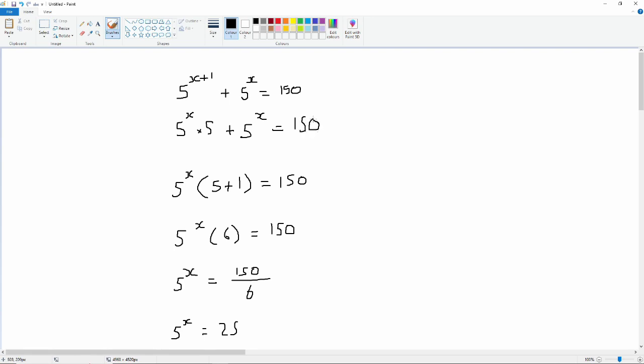But what else we can say is that this 5 to the power x is the same as 1 times 5 to the power x because anything multiplied by 1 is itself. So, we've got 5 to the power x multiplied by 5 and 5 to the power x multiplied by 1. In fact, let me just move this 1 across. So, we have 5 to the power x multiplied by 5 plus 5 to the power x multiplied by 1 is equal to 150.